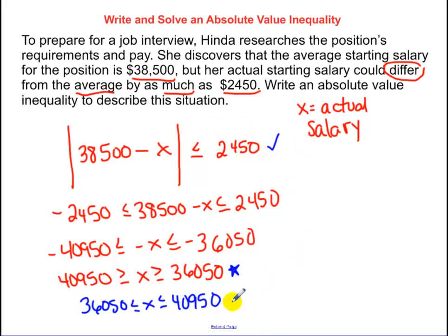So, this is our absolute value inequality. It doesn't say to solve, but I went ahead and solved anyway. That's the range that her salary could be in.